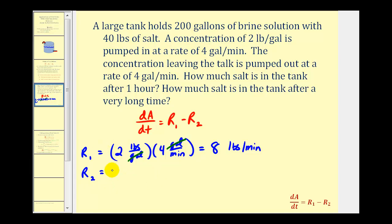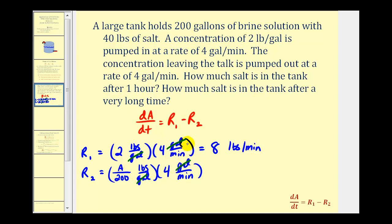R₂ is a little trickier. We have to write an expression for the concentration because it's changing as the mixing occurs. We start off with 40 pounds of salt per 200 gallons, but the 40 is changing, so we can't use that for our concentration. We use the expression A divided by 200 pounds per gallon, where A is the unknown. The rate is 4 gallons per minute, gallons simplify out, giving us 4A over 200, which simplifies to A divided by 50 pounds per minute.